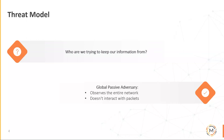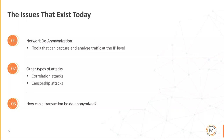A global passive adversary means they observe all traffic on the network. They don't interact with it, but they are able to collect all network information. Issues that exist today include network de-anonymization. There are tools anyone can use to capture packets — free open source tools. Protocol analyzers are able to analyze exactly what is happening with these packets. By doing this observation, you can perform certain types of attacks — one specific example being a correlation attack.